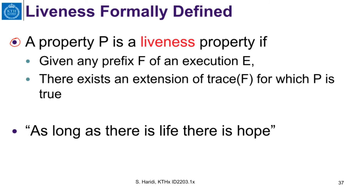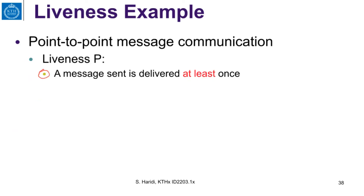Now let us look at liveness. A property P is a liveness property if the following condition holds: given any prefix of an execution E, there exists an extension — the trace of some execution F — for which P is true. What this says is that if you have a prefix of an execution, we can always find a way to extend this execution so that the property P is satisfied. As long as there is life, there is hope. For example, a liveness property here is: a message sent is delivered at least once.